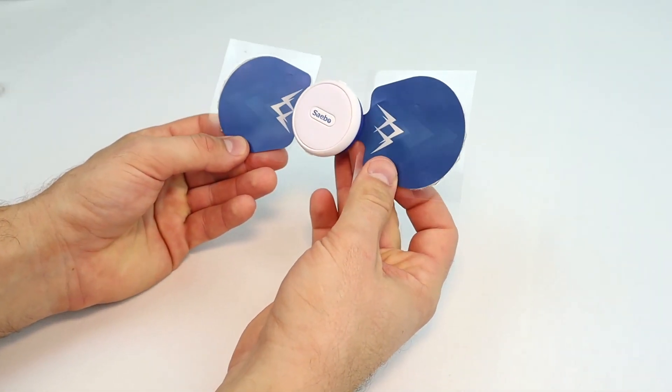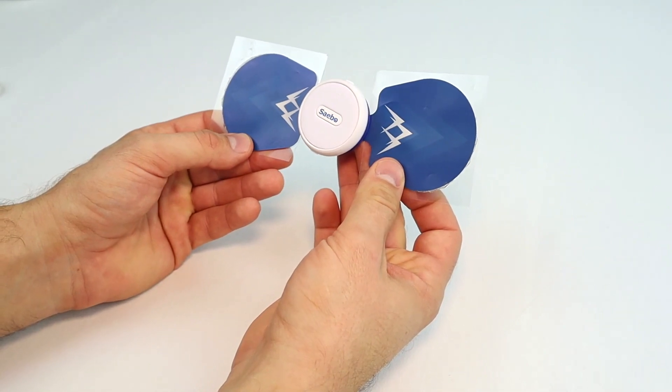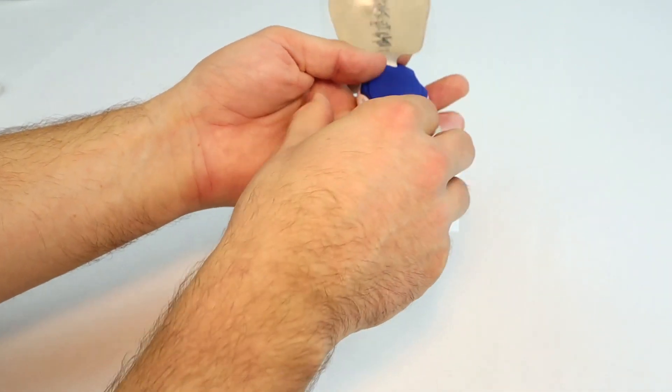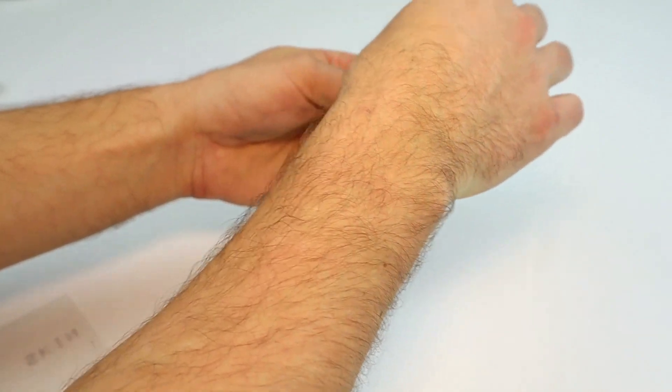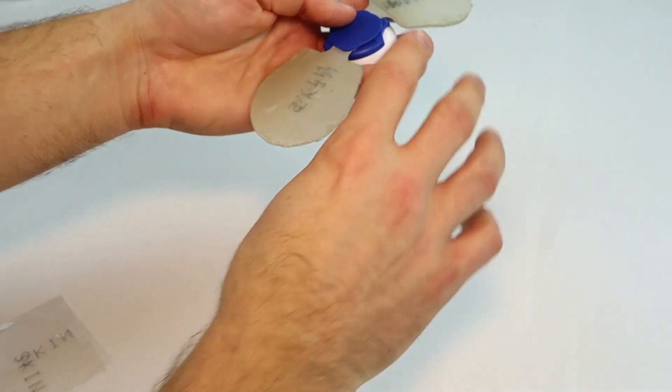This is what your SableStim Go will look like when the gel pads are applied. To use the SableStim Go, remove the plastic covering over the gel pads and save them for later. This is what you will reapply when you are finished.